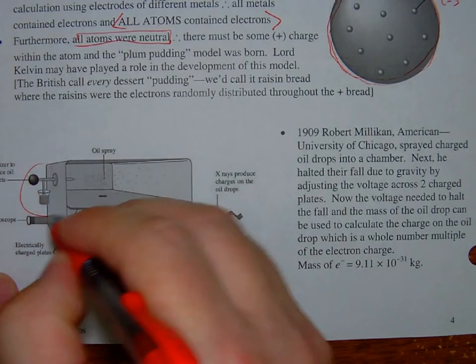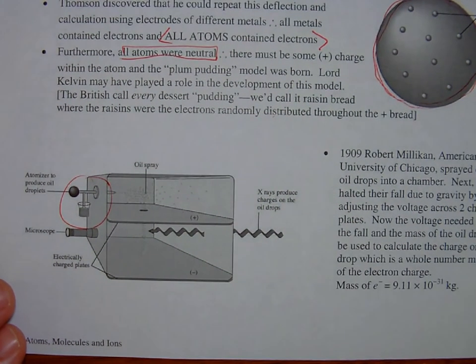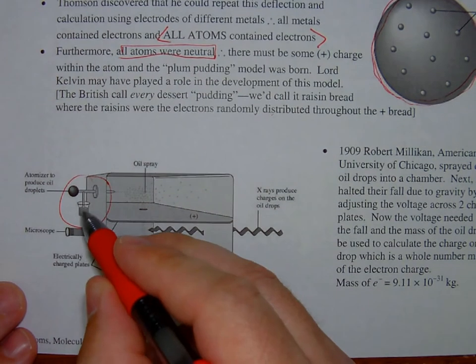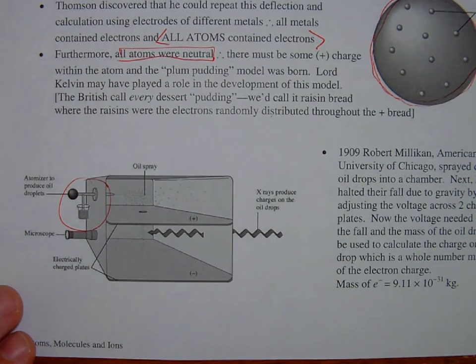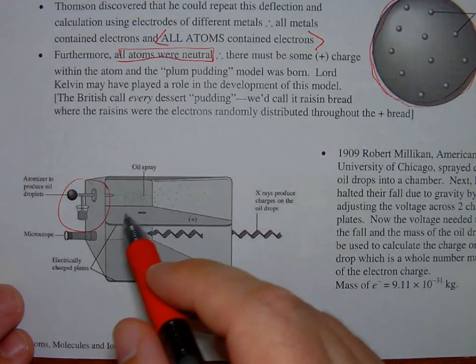So we would start with this atomizer, which, if this looks familiar, doesn't this look like an old-timey perfume sprayer? How you would spray the air with this rubber ball and liquid and it would turn it into a spray instead of a liquid. Well, that's what an atomizer is. It turns it into small chunks, a spray.